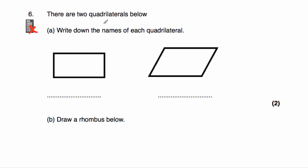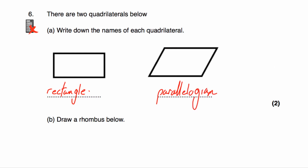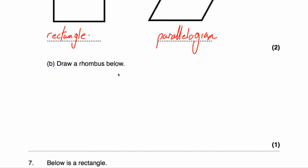Question number six. There are two quadrilaterals below. The first one is a rectangle and the second is a parallelogram. Part B asks us to draw a rhombus. A rhombus is a four-sided shape where all four sides are the same length, the opposite angles are equal, and it has two lines of symmetry.